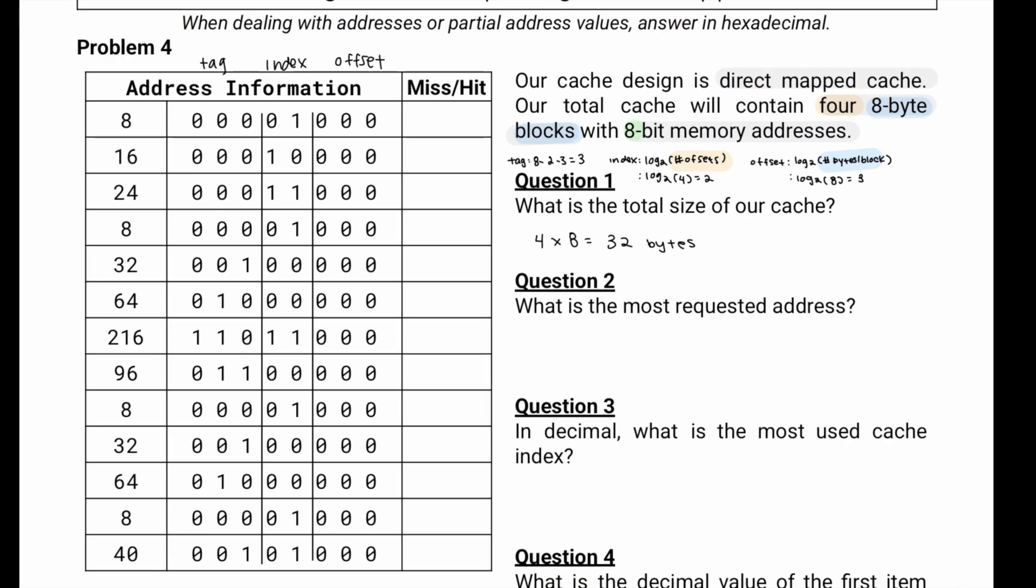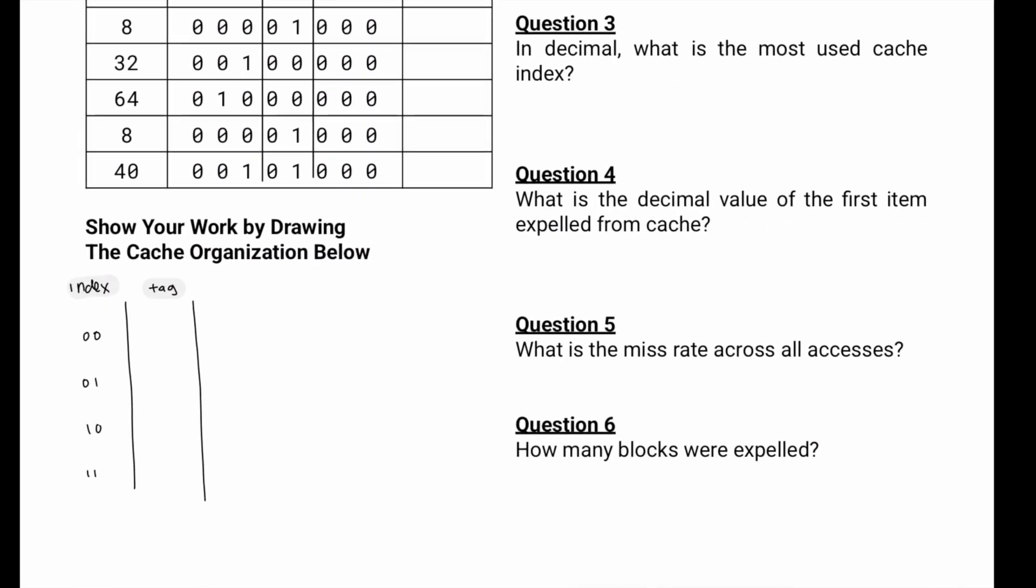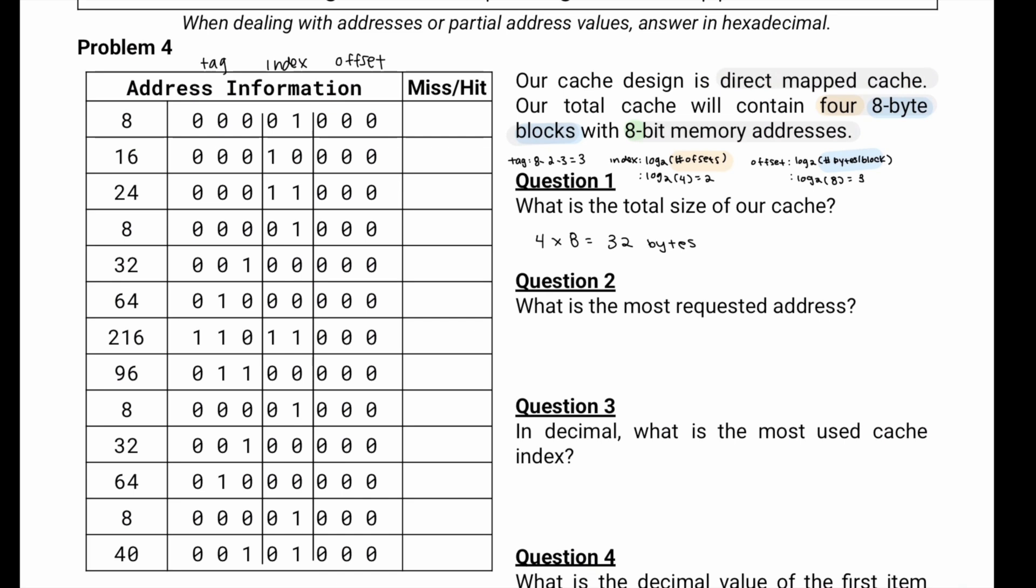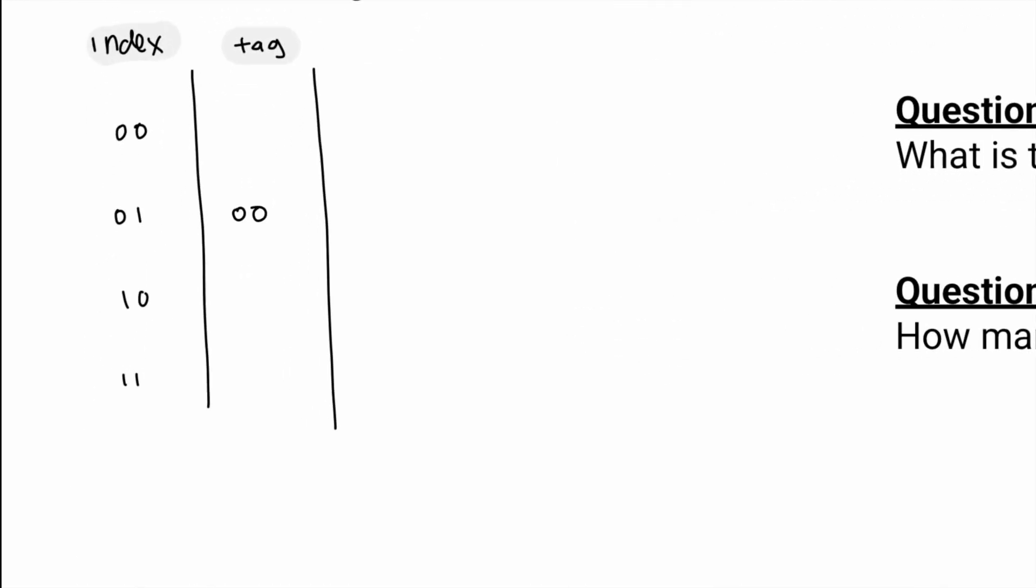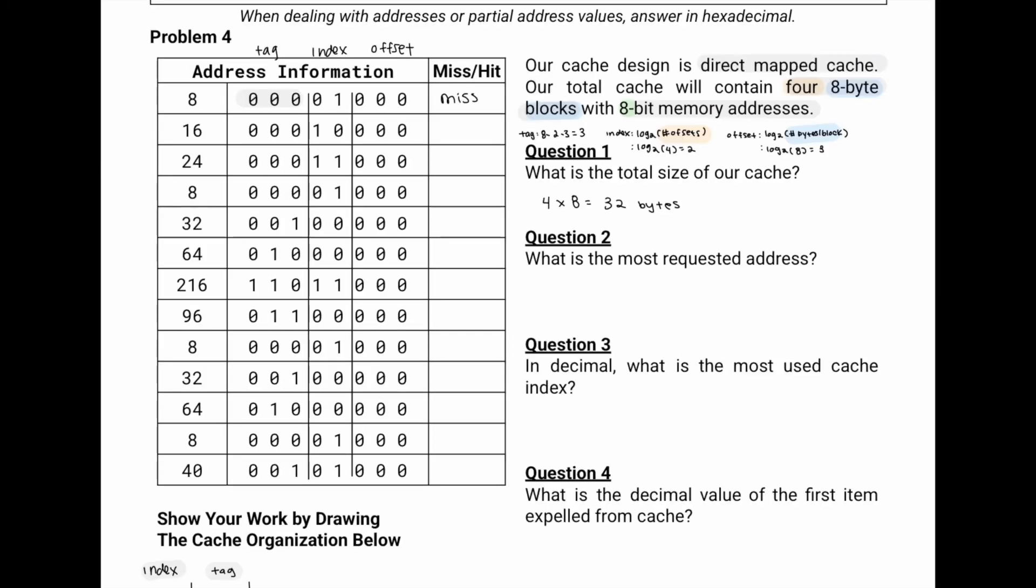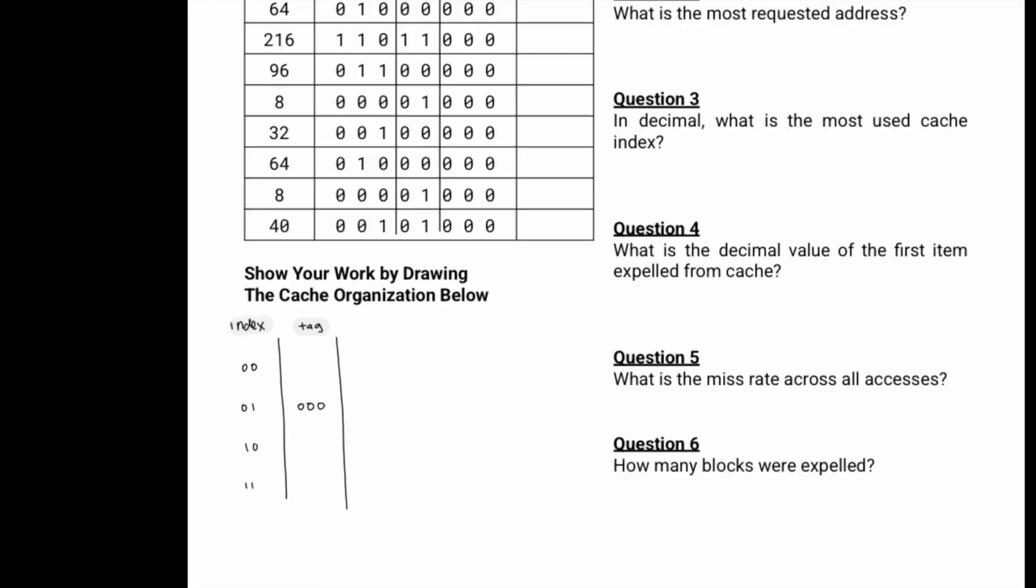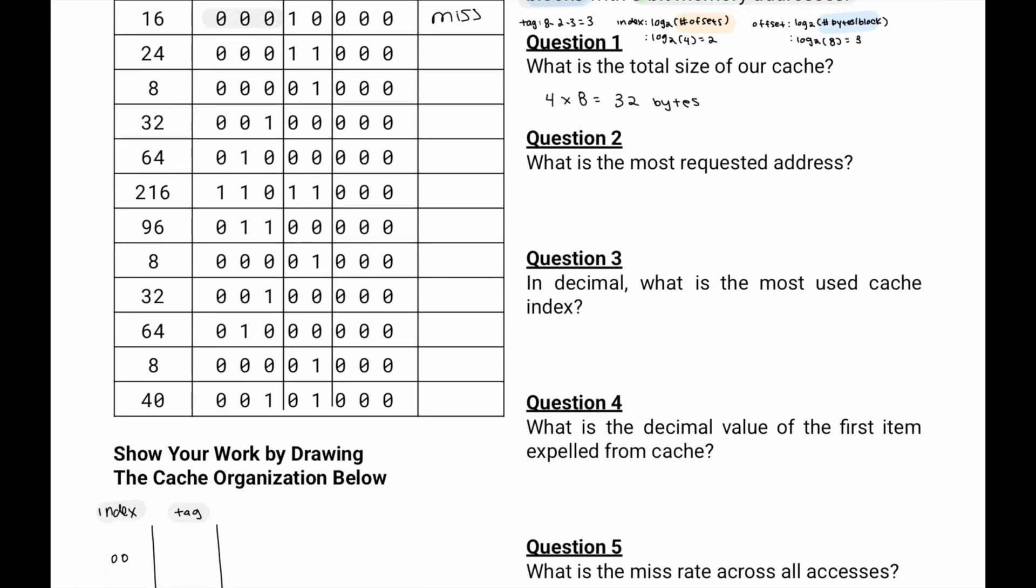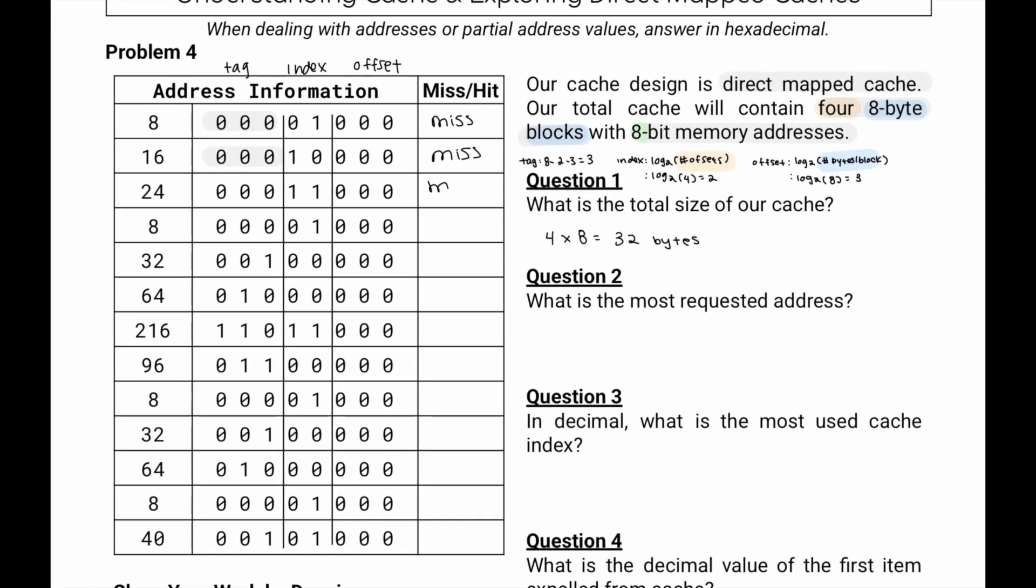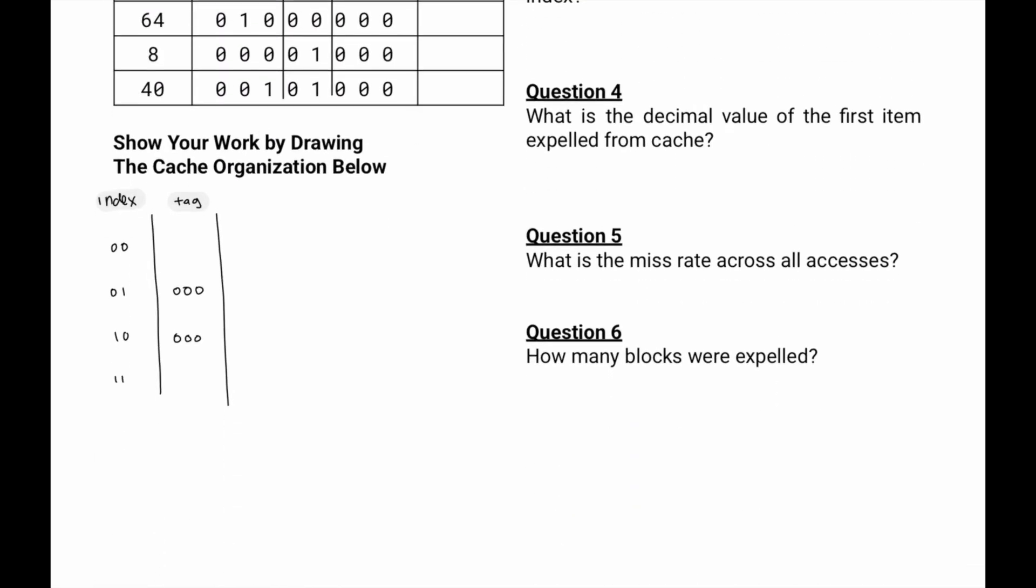So the first address is at 01. If we go to index 01, there is no tag there. So that tag does not match our current tag, 000. So that will be a miss. And then we'll go to that index 01, and our tag will be 000. Then at the next point, we're going to go to 10. We'll check 10. The tag there does not match our current tag, 000. So that'll be a miss. And at that index, we will place our tag 000. Then at 11, it'll be the same thing. It's going to be a miss because we haven't placed that tag there yet. And then at 11, it'll be 000.